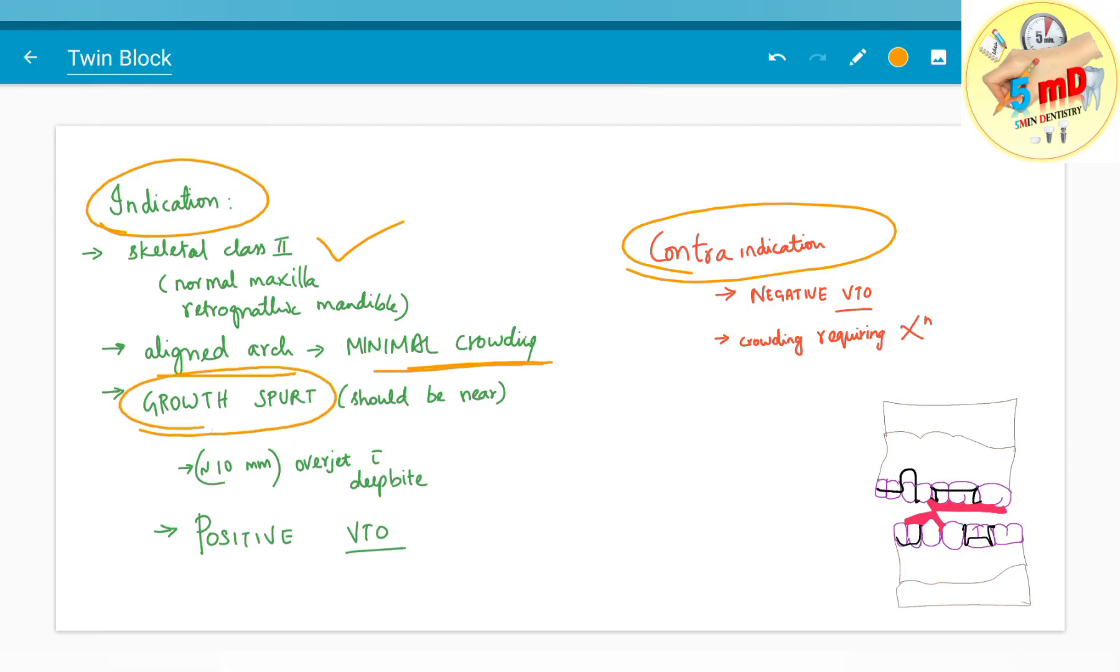The patient should be in his or her growth spurt. Overjet with deep bite should be approximately 10 mm and in case of positive VTO as I said, visualized treatment objective.